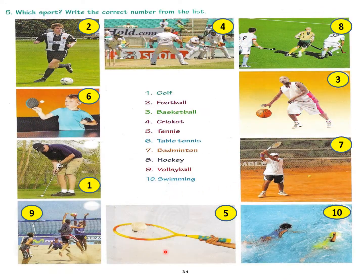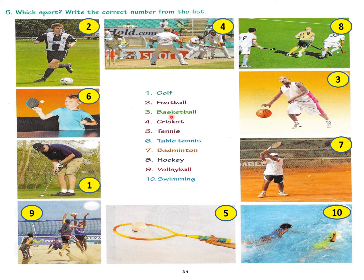Now on page number 34 you have to identify the sports from the pictures given and write the number of the game to match them. First is golf, so you will write number 1 here because this picture is of golf — see the club, the ball is hit with the club. Then number 2 is football, so write number 2 here because this man is playing football. Then number 3 is basketball — write 3 in this circle because this is dribbling the ball to throw into the basket.